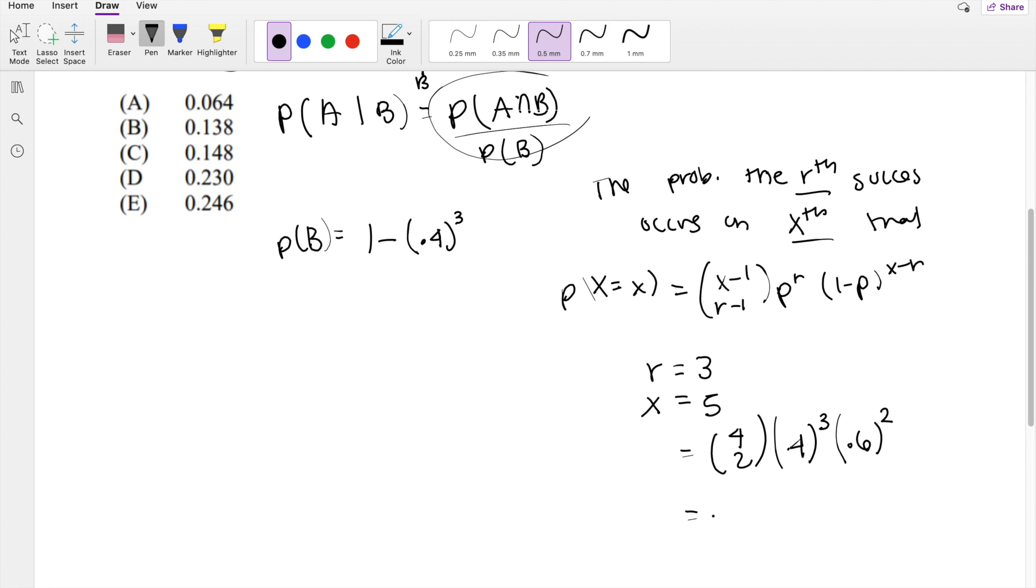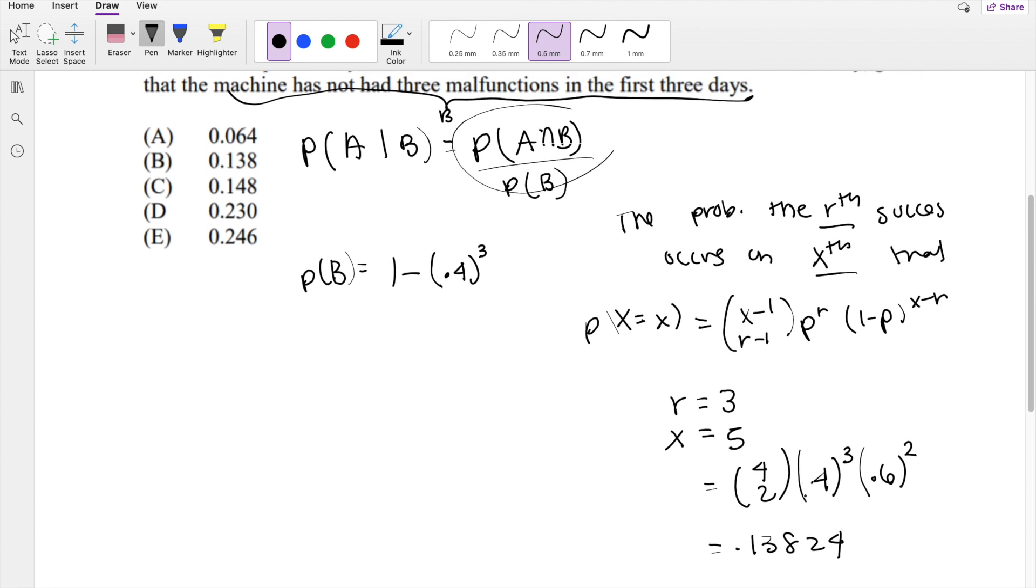And this equals 0.13824. So when we combine that numerator and denominator, we finally get the conditional probability. It's equal to 0.13824 divided by 1 minus 0.4 to the cube.